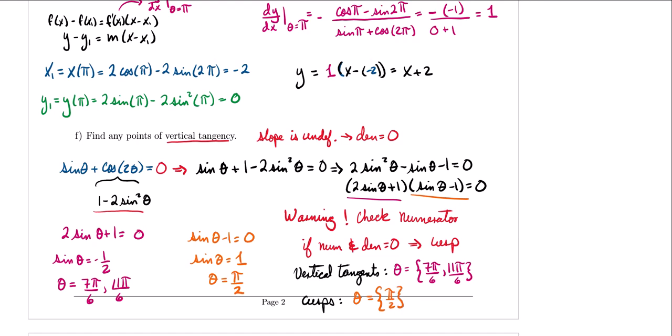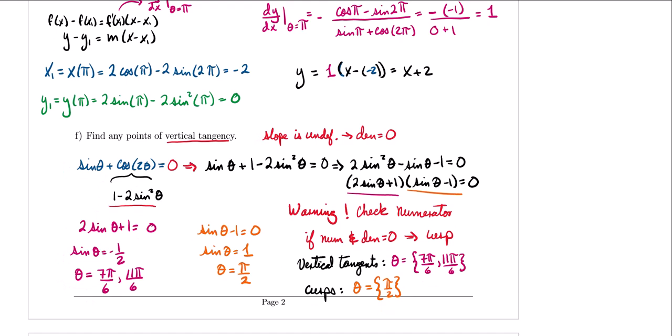So the vertical tangents occur at theta equals 7π/6 and 11π/6, while theta equals π/2 gives a cusp. That wraps up this part of the lecture — we'll continue in part 2. See you there.